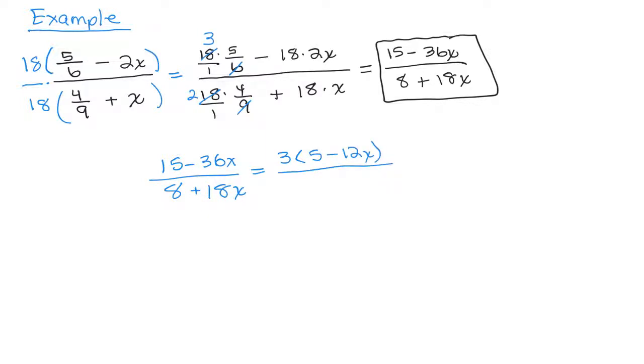And then the denominator, you could factor out a 2, which is 4 plus 9x. And there are no common factors, so this would be the answer if you left the numerator and denominator in factored form.